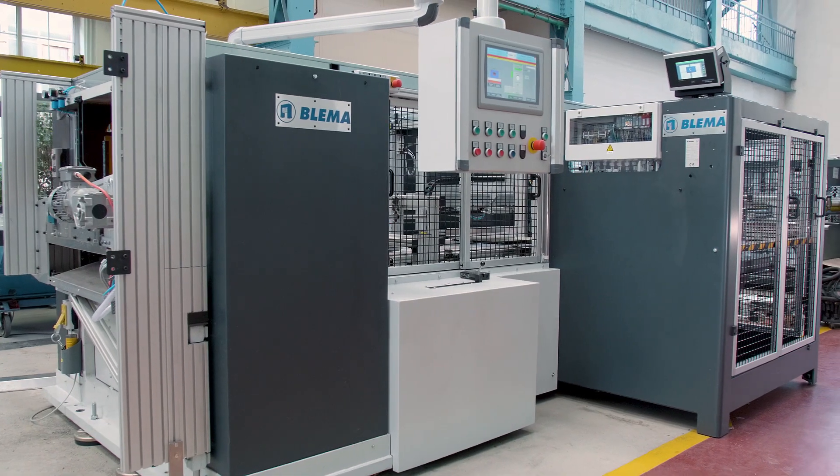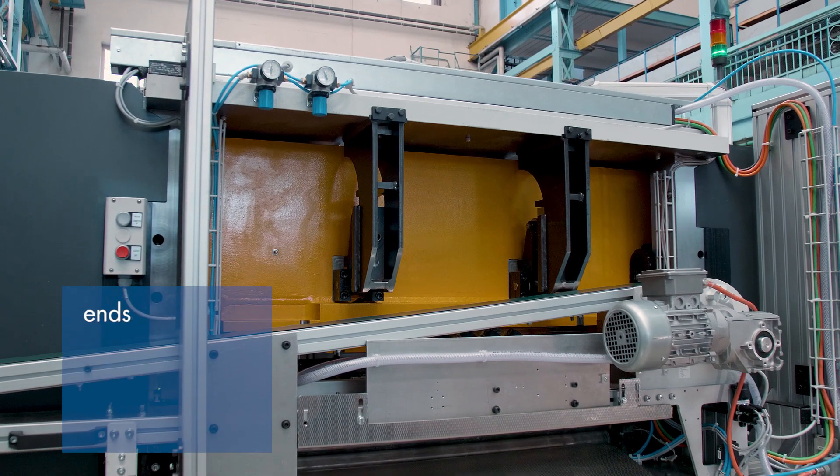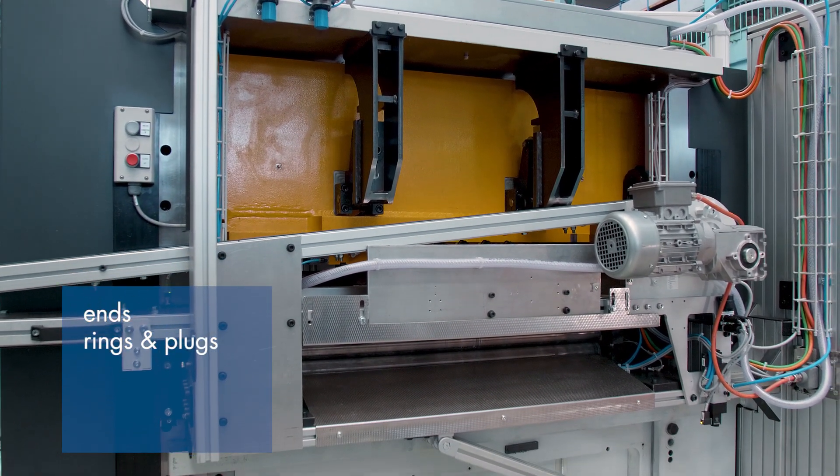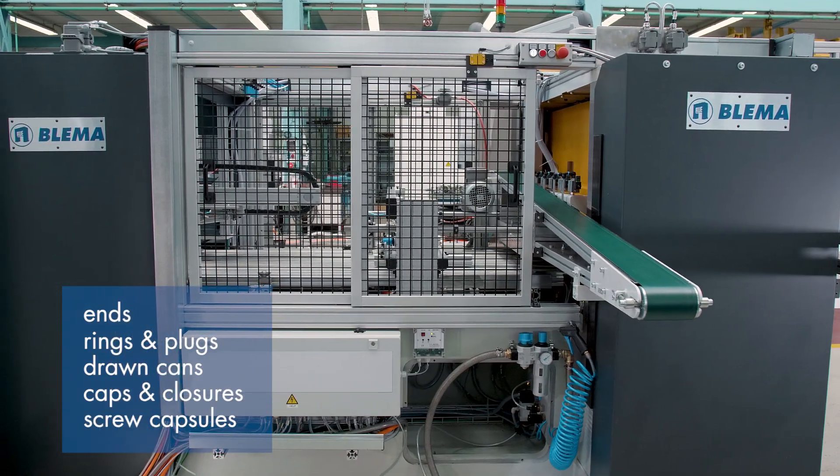The Kappa IV is a fully automated portal press for the manufacturing of ends, rings and plugs, drawn cans, caps and closures, or screw capsules.